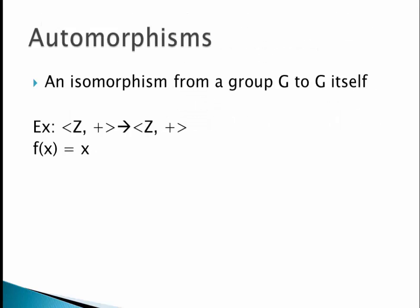Lastly, an automorphism is an isomorphism from a group G to itself, keeping elements within the same group. An example would be the integers under addition mapped to the integers under addition with f(x) = x, which is an automorphism.